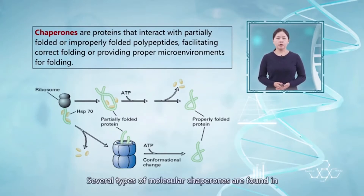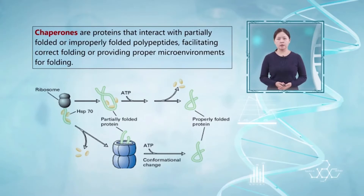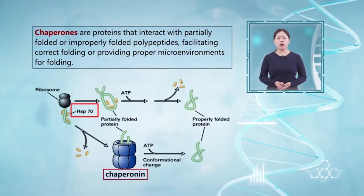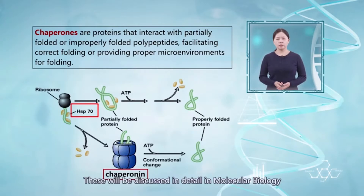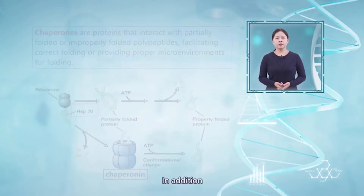Several types of molecular chaperones are found in organisms ranging from bacteria to humans. Two major families of chaperones, including the HSP17 family and the chaperonins, are both well studied. This will be discussed in detail in molecular biology.